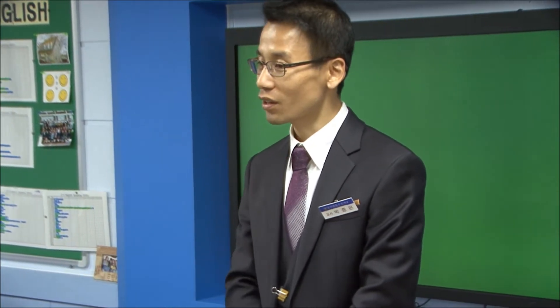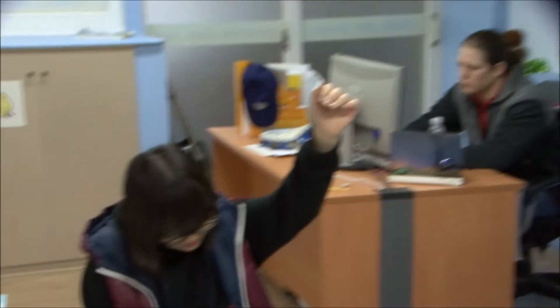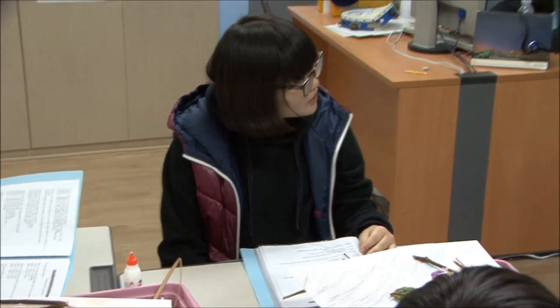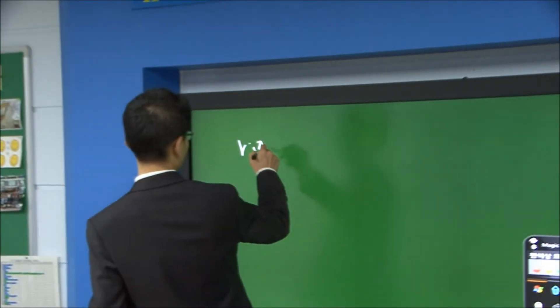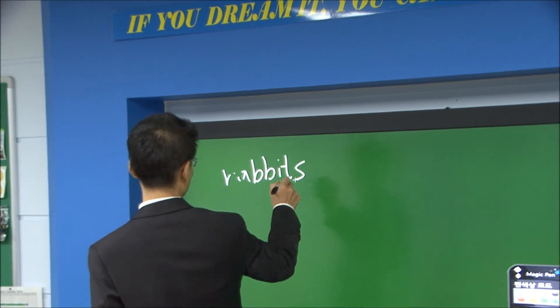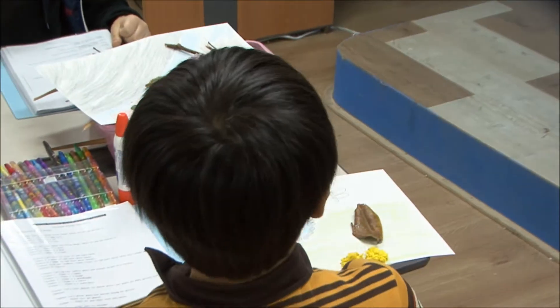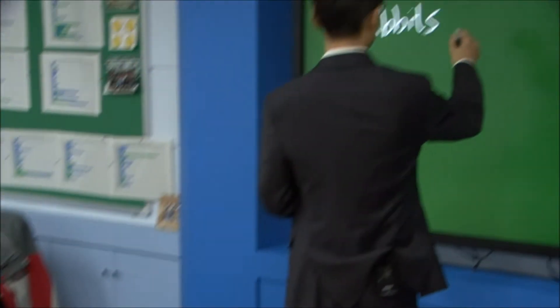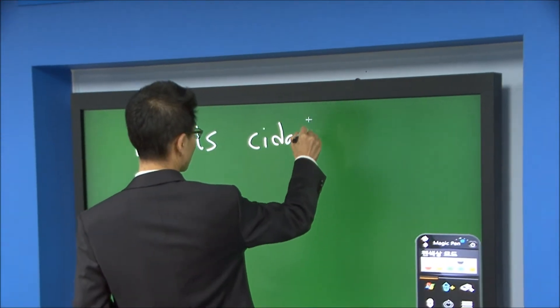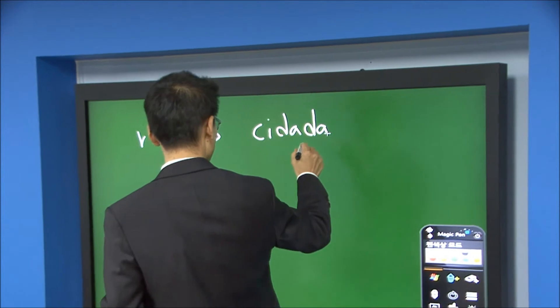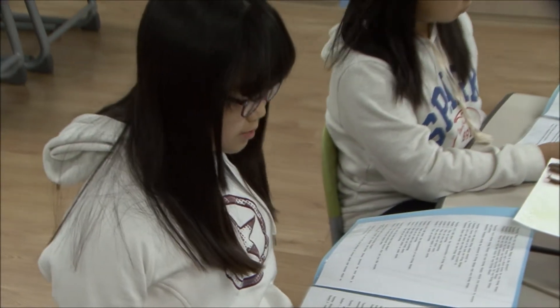Let's represent some creatures which you can see around you. What kinds of creatures can you see in summer? Rabbit — hold on. Rabbits, and there is a cicada — cicada, okay, C-I-C-A-D-A — cicada, and there are grasshoppers.